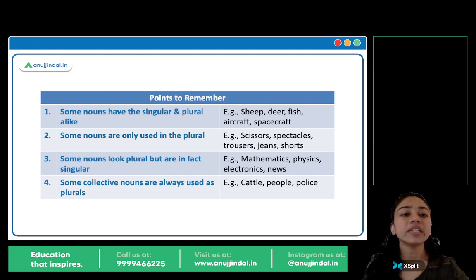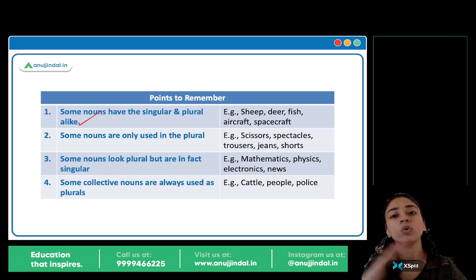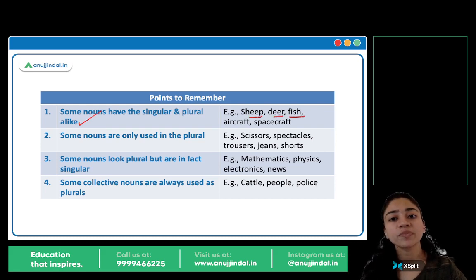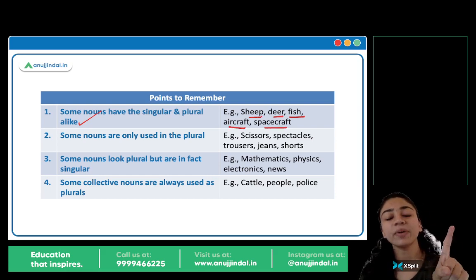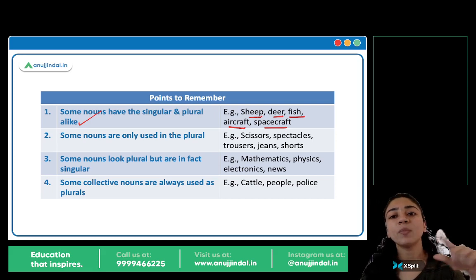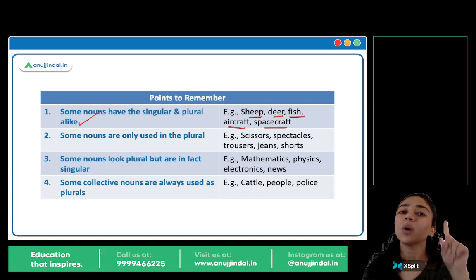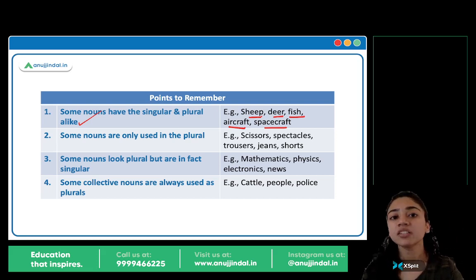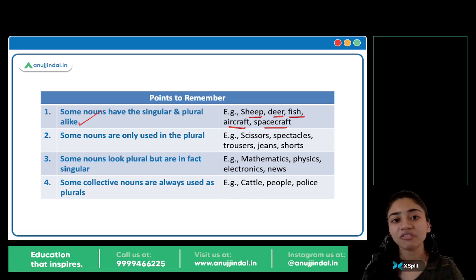Next, kuch important points hain. First — some nouns have the singular and plural alike. Kuch nouns ka singular and plural same hota hai. Jaise sheep, deer, fish, aircraft, spacecraft — singular bhi sheep hai, plural bhi sheep. One sheep, many sheep. One deer, many deer. One fish, many fish — there are many fish in the sea, not many fishes. One aircraft, many aircraft, not aircrafts.